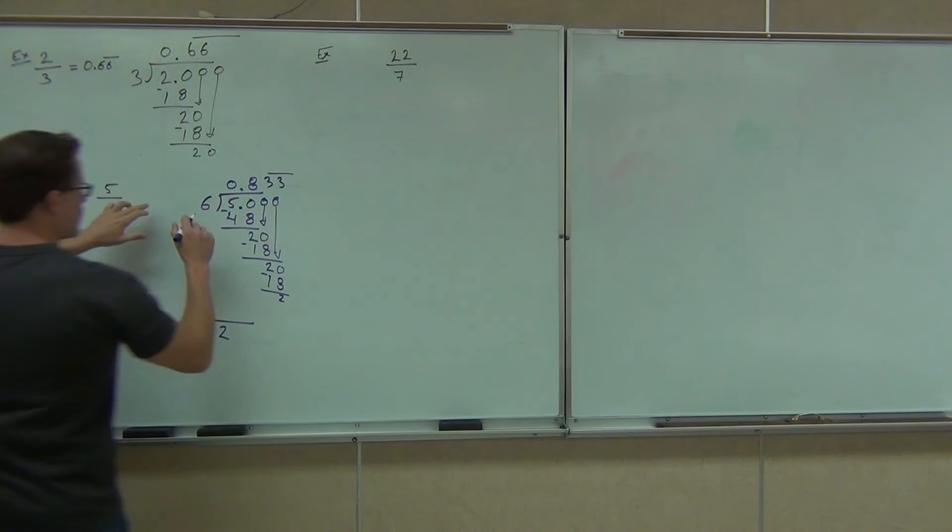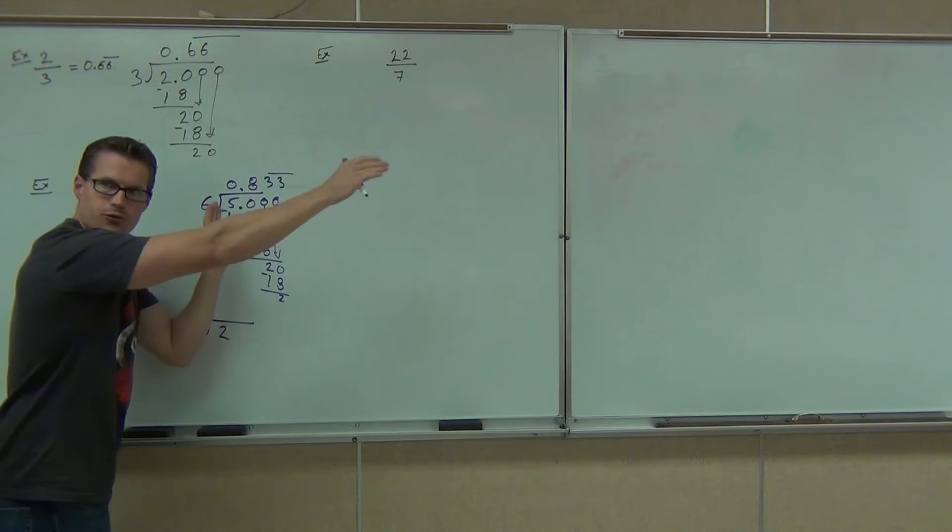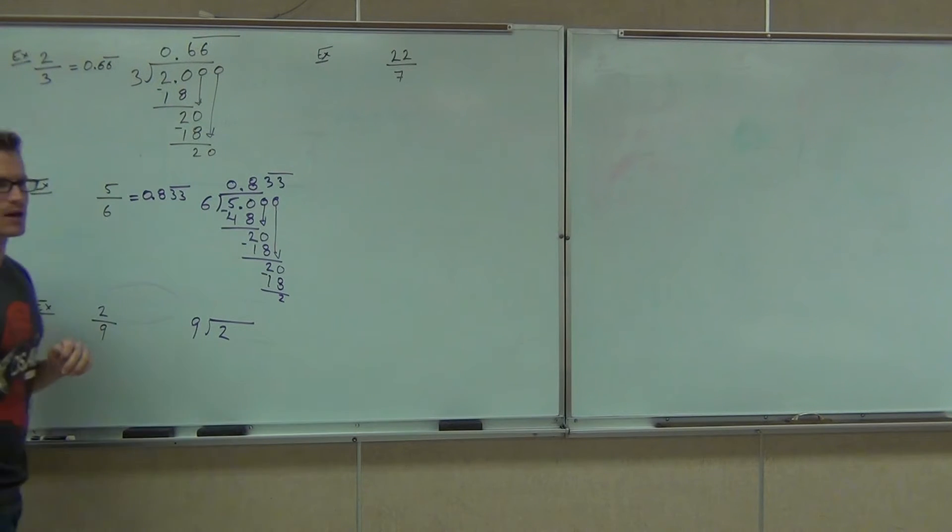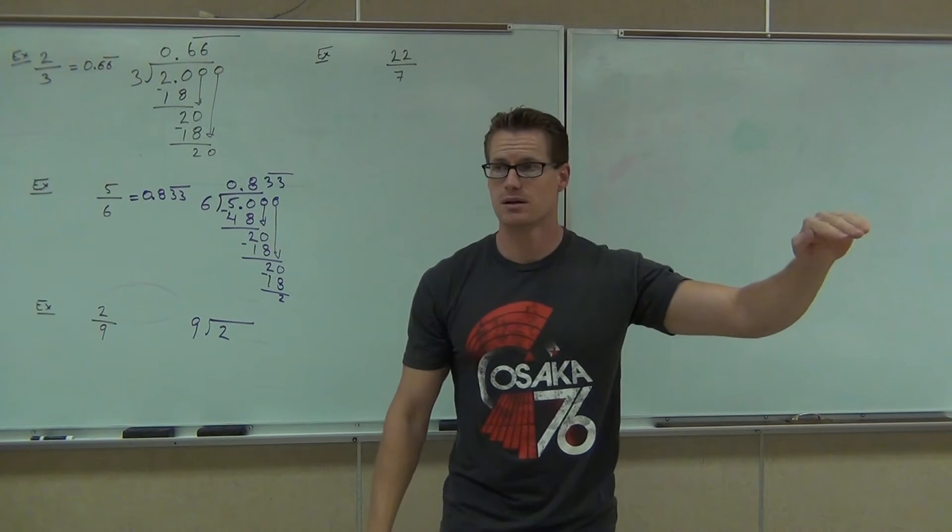So what we've done here is we've got the zero, we've got the eight, but then we've got three, three, three, three, three going forever. So we're going to write this as 0.833 and highlight that three, three, because that three, three is what's repeating there. Does that make sense to you? All right, let's try one more.